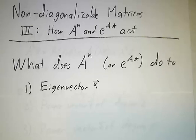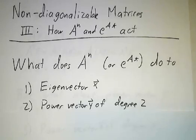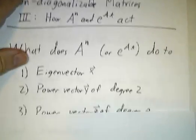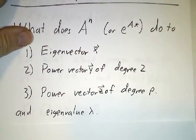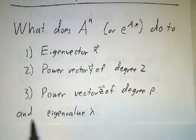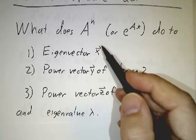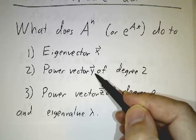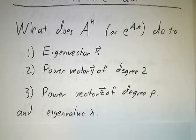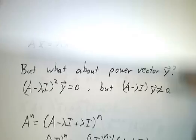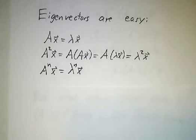We're first going to look at what happens when A to the n hits an eigenvector, then a power vector of degree 2, and then a power vector of degree p, and all of these guys are going to have eigenvalue lambda. We'll always write x for the eigenvector, y for the power vector of degree 2, and z for the power vector of degree p. And then when we're done with A to the n, we're going to do the same thing for e to the At.